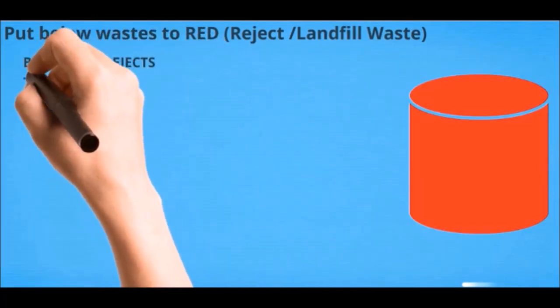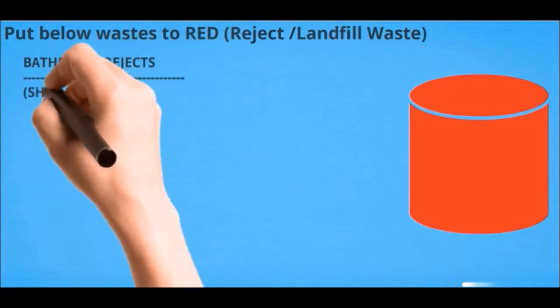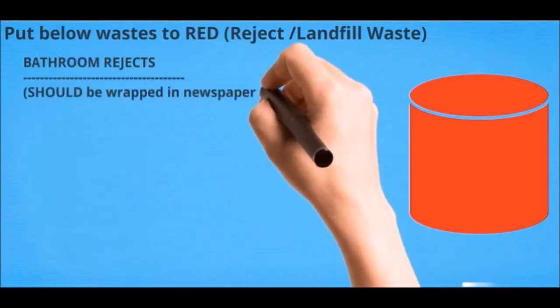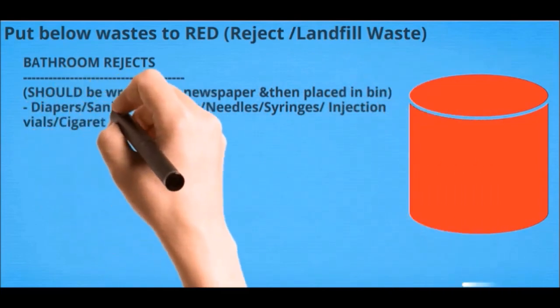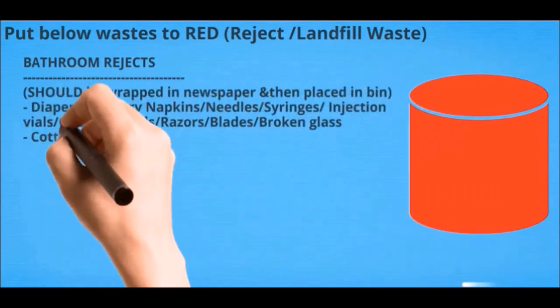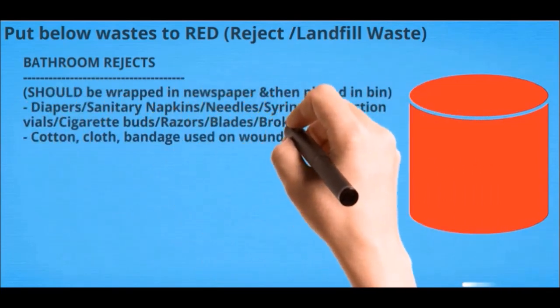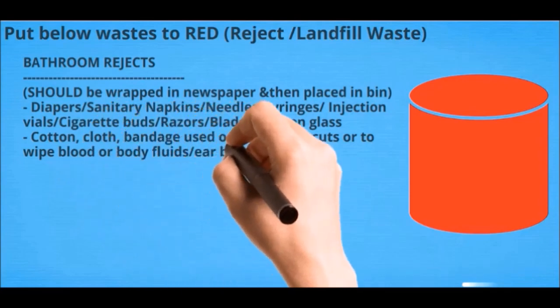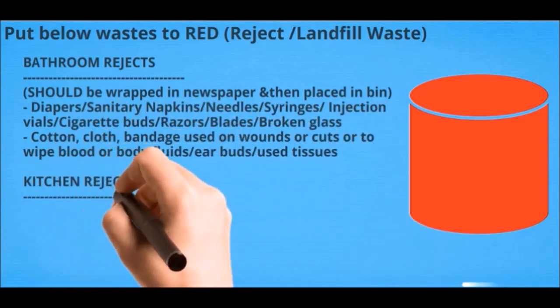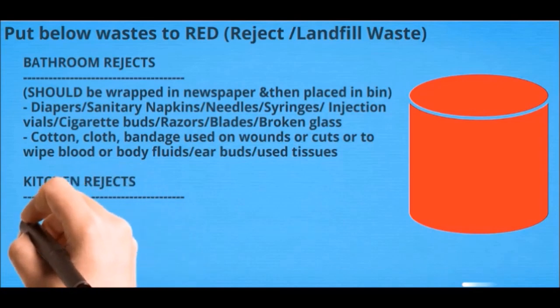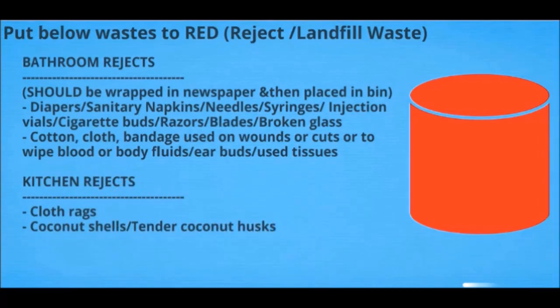Bathroom rejects - should be wrapped in newspaper and then placed in the bin: diapers, sanitary napkins, needles, syringes, injection vials, cigarette butts, razors, blades, broken glass, cotton, cloth, bandage used on wounds or cuts or to wipe blood or body fluids, earbuds, and used tissues.